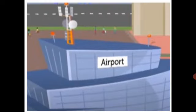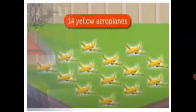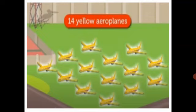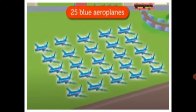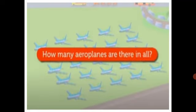Come, let us solve some stories with two digit numbers at the airport. There are 14 yellow aeroplanes and 25 blue aeroplanes at the airport. How many aeroplanes are there in all?